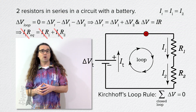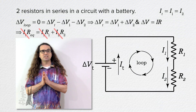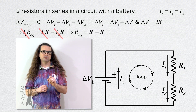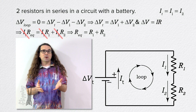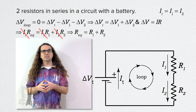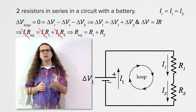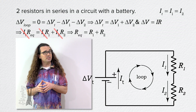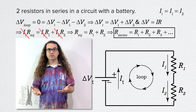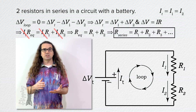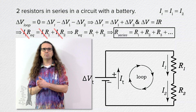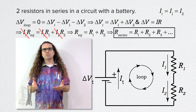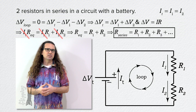Therefore, the equivalent resistance for two resistors in series is the sum of those two resistances. We could perform this with as many resistors in series as we wanted, and the equivalent resistance would always be the sum of the resistances. So the equivalent resistance of resistors in series equals R₁ + R₂ + R₃ + as many resistors as we have in series.